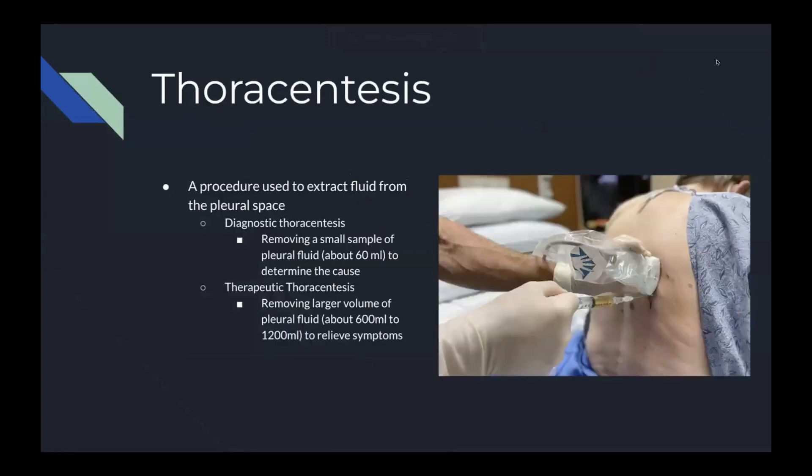Thoracentesis is a procedure used to extract fluid from the pleural space. There are two types performed in the field. Diagnostic thoracentesis removes a small sample of pleural fluid, about 60 milliliters, to determine the cause of the pleural effusion. Therapeutic thoracentesis is done to remove a large volume of pleural fluid, about 600 to 1,200 milliliters, mainly to relieve the symptoms of pleural effusion or other fluid occurring in the lungs.